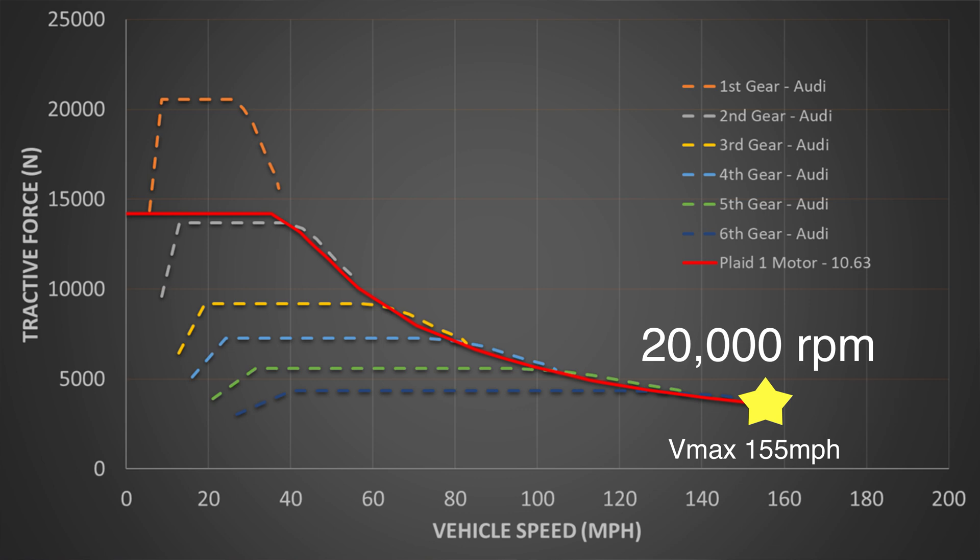For this first calculation, we will use 20,000 RPM max motor speed. So solving for the gear ratio gives us 10.63 to 1. It bumps the peak tractive force up to 14,000 newtons, and now makes the single Plaid motor equivalent to a turbo V-6 from second gear all the way to top speed. Also notice that in the peak power part of the curve, this ratio change has no effect. This is due to the incredible power curve of the Plaid motor.